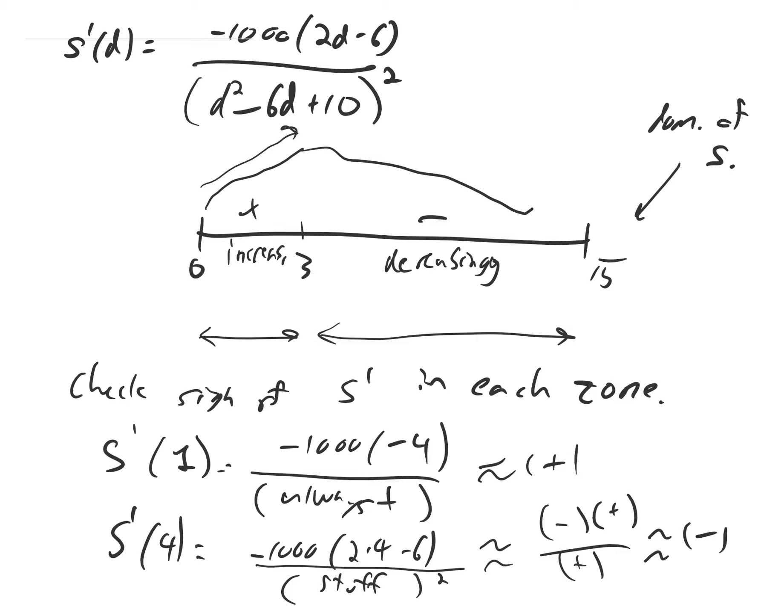We're increasing up to d equals 3, and then we're decreasing afterwards. At the top of this hill, we have a local max. No local minima.